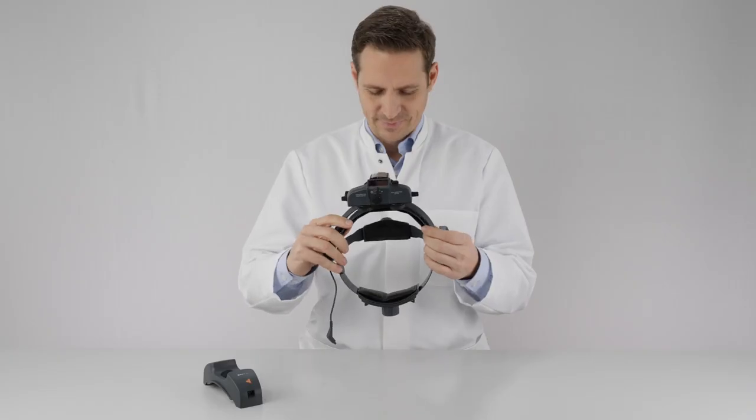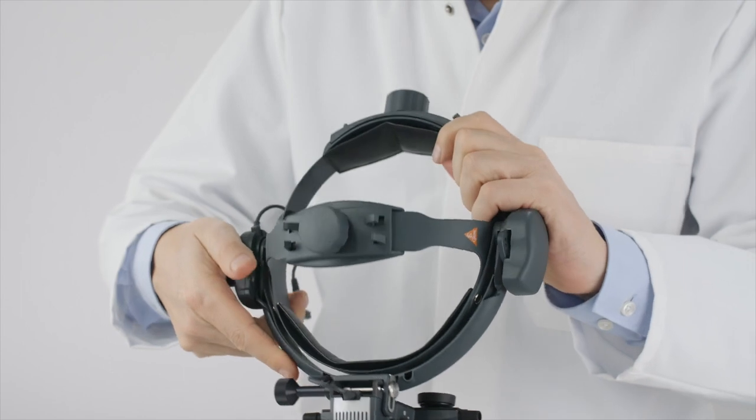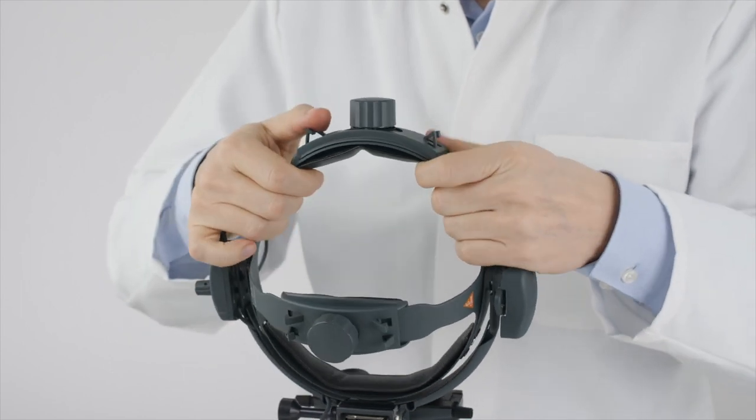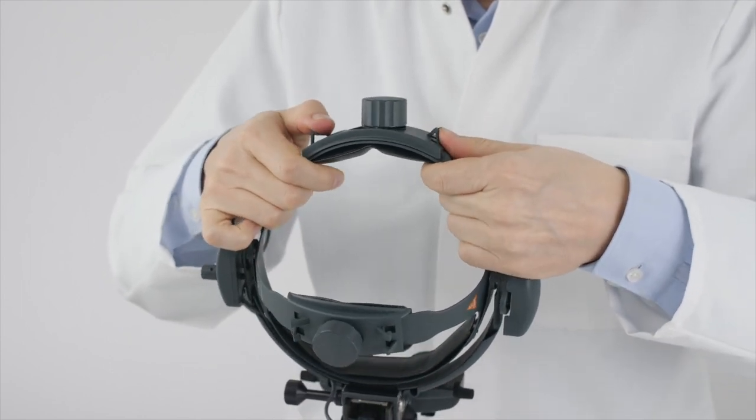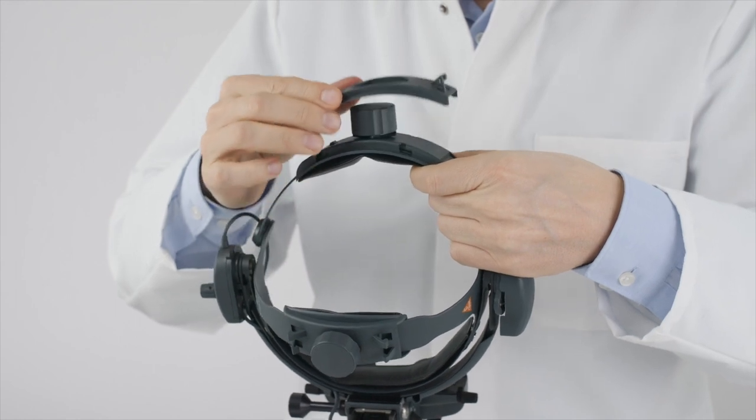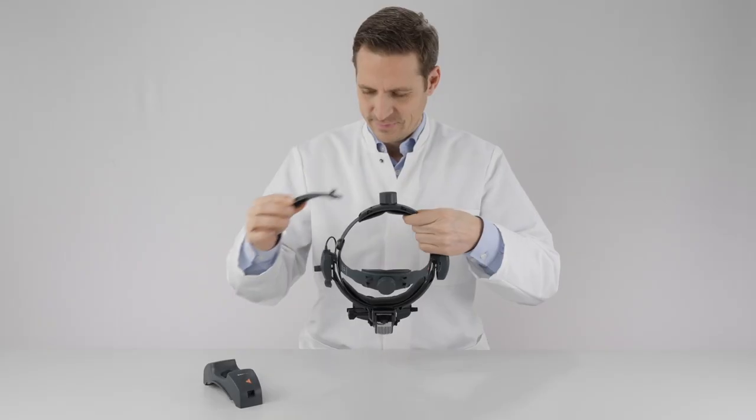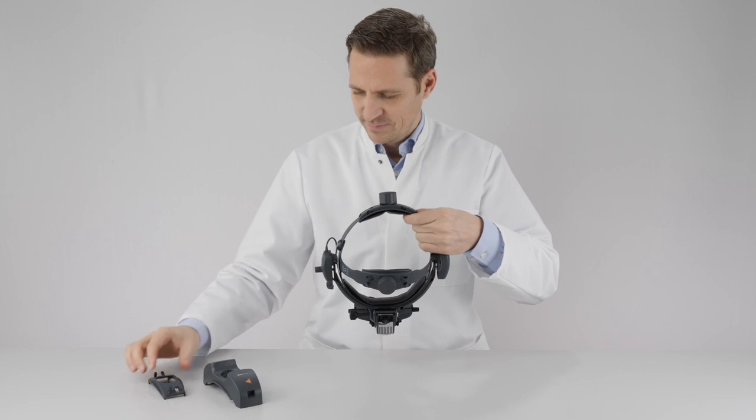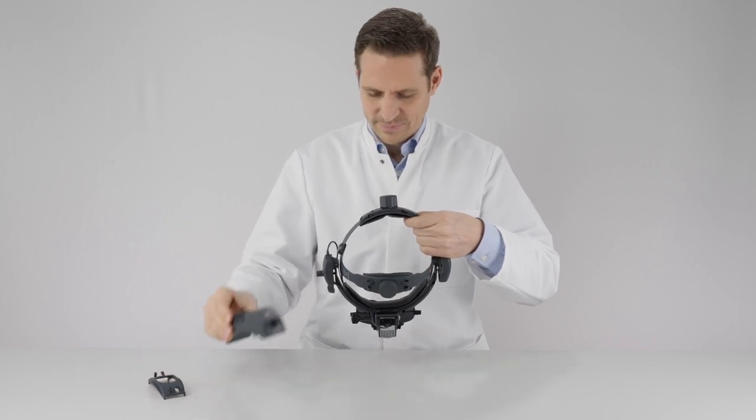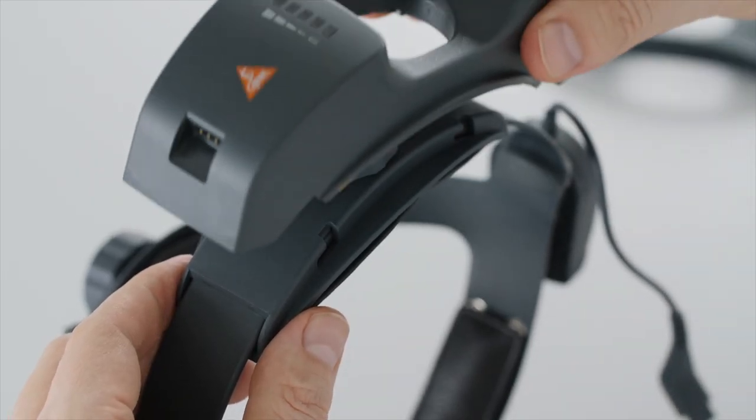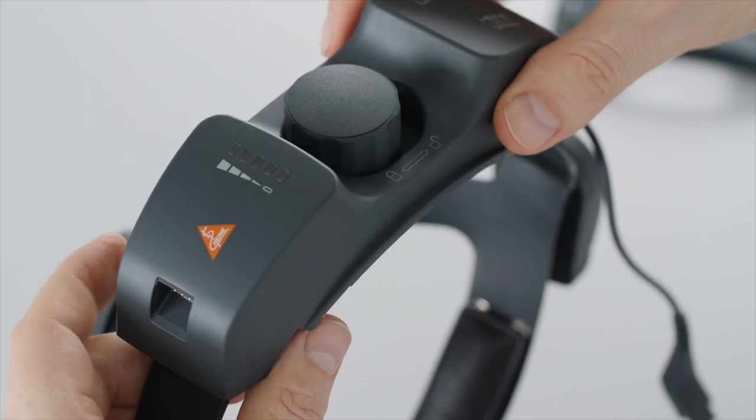First, the rechargeable battery. To prepare the Omega 500 for use, attach a charged MPAC unplugged battery to the headband. If necessary, remove the segment cover from the headband. Then insert the battery and slide it to the left until it latches audibly.